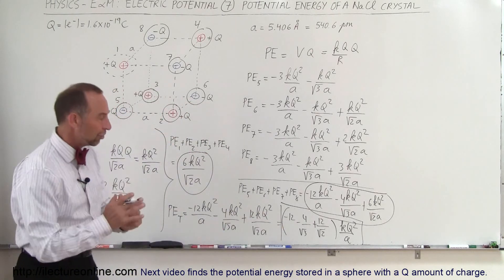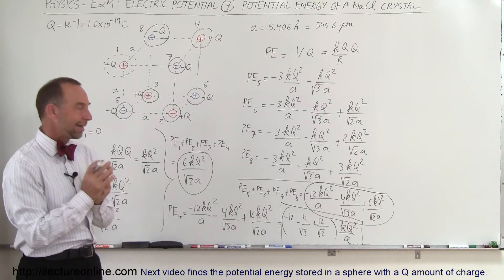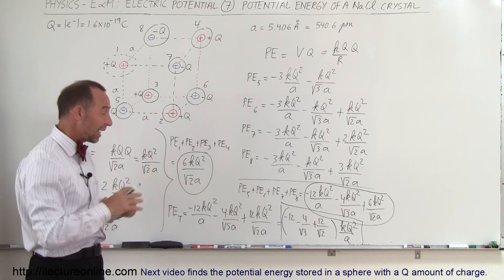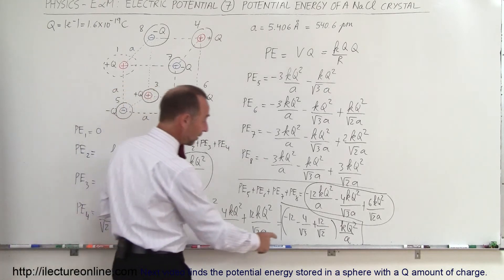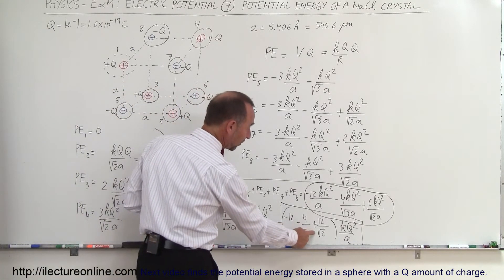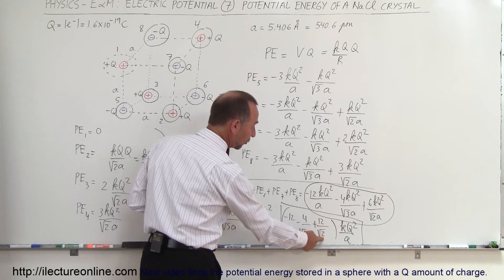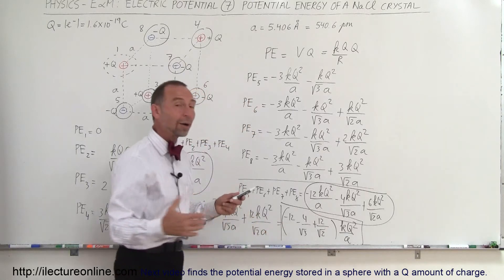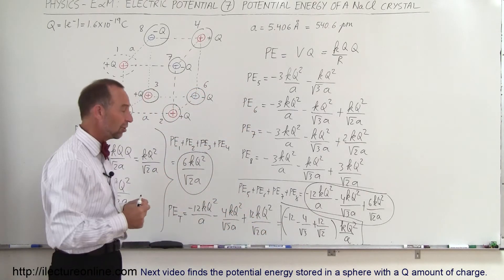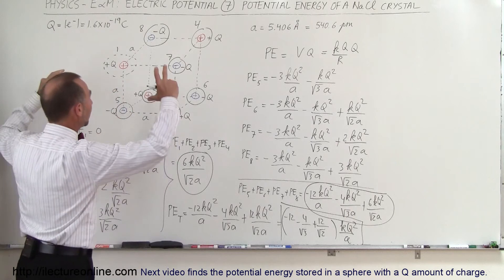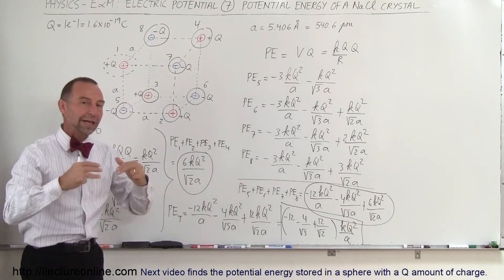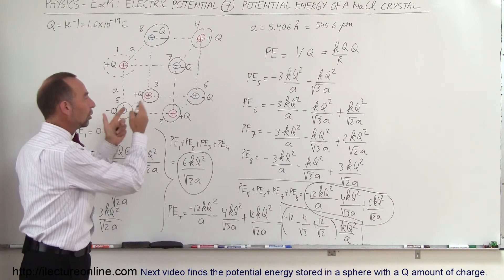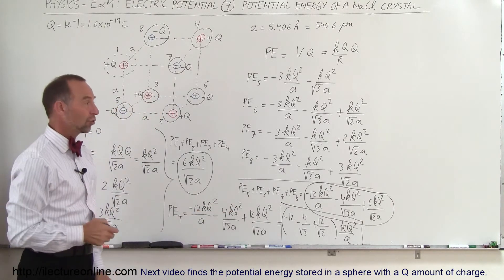So that would be the total energy stored inside a sodium chloride crystal. Now the question is: is it positive energy or is it negative energy? Notice that there are two negative terms. There is one positive term, and since 12 is divided by the square root of 2, that makes it less than 12. So the negative terms overpower the positive terms, which means there's negative potential energy — meaning sodium chloride naturally settles into a crystalline structure at a lower energy level.